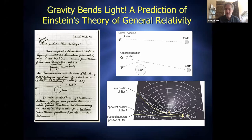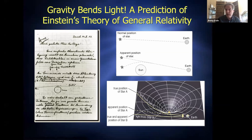Einstein developed general relativity around the first decade of the 1900s. He predicted that gravity should be able to bend light. At first glance that may not make a whole lot of sense — when we think of gravity, we think of the attraction between two objects that have mass. Light doesn't have mass; it comes in the form of individual photons, which are massless. You might think light should not feel the effects of gravity, but it turns out that it does.